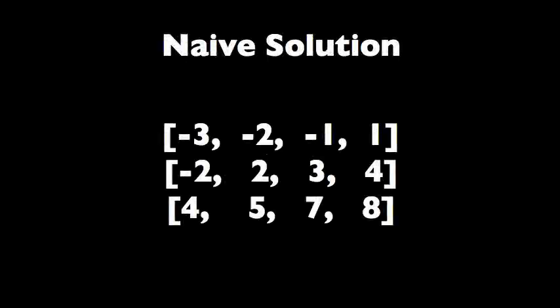Here's a naive solution for this problem. We'll just start from the first row and count the number of negative numbers one by one. So we find three negative numbers here.